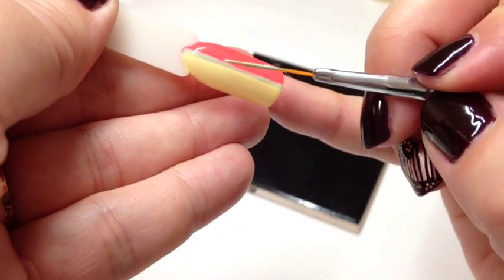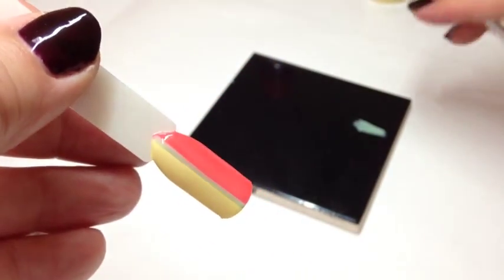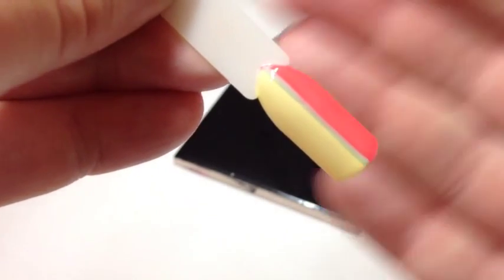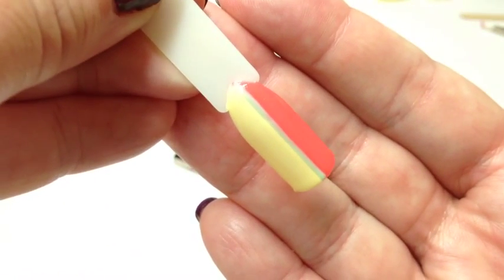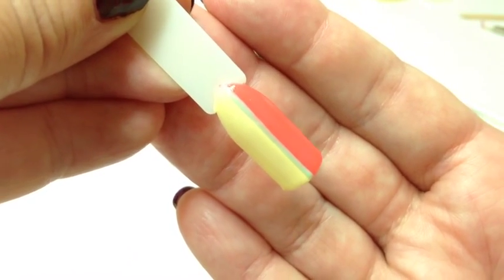I'm actually going to go over and do two coats. So there is your stripe. Clay Canyon would have been a better choice because it's a bit of a stronger colour. I'm just going to pop that in the lamp for two minutes and do another coat while I'm off camera.